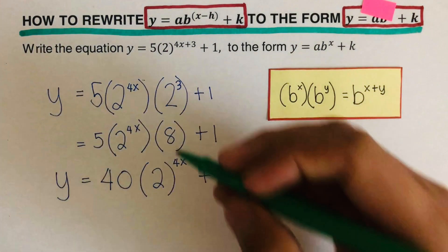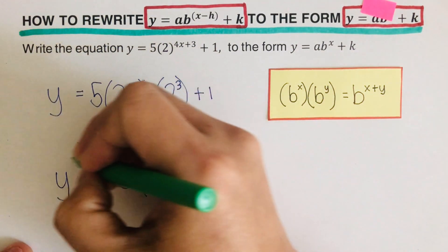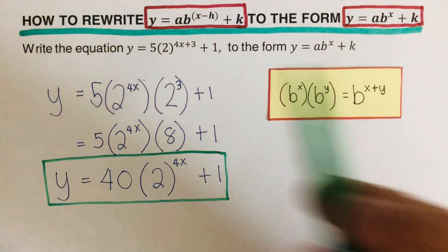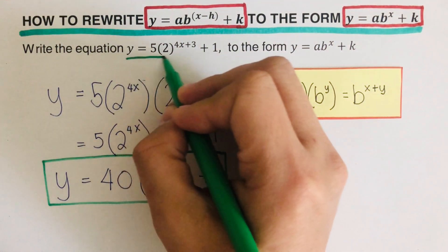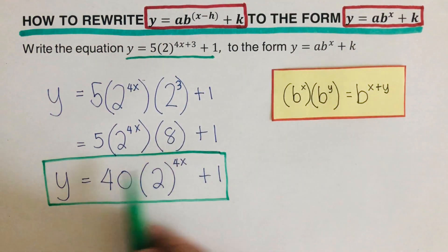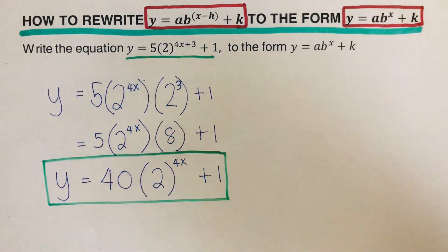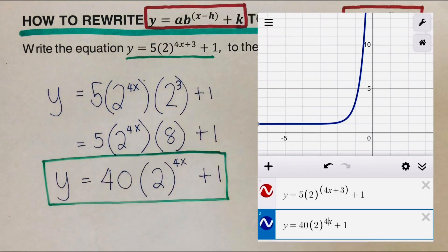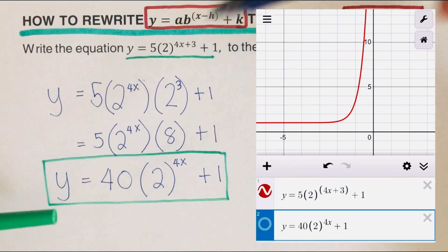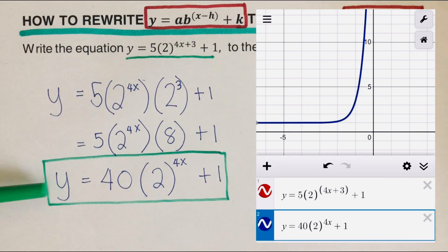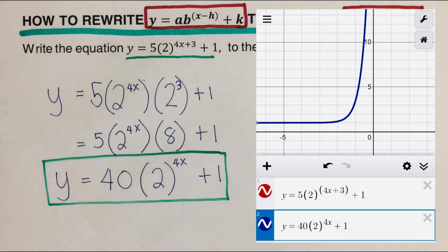These two equations are equivalent — they are just the same equation in different forms. The underlined equation and the boxed equation are equivalent. On the side you can see the graph: both the red equation and the blue equation are a match, sitting on top of each other, confirming they are equivalent.